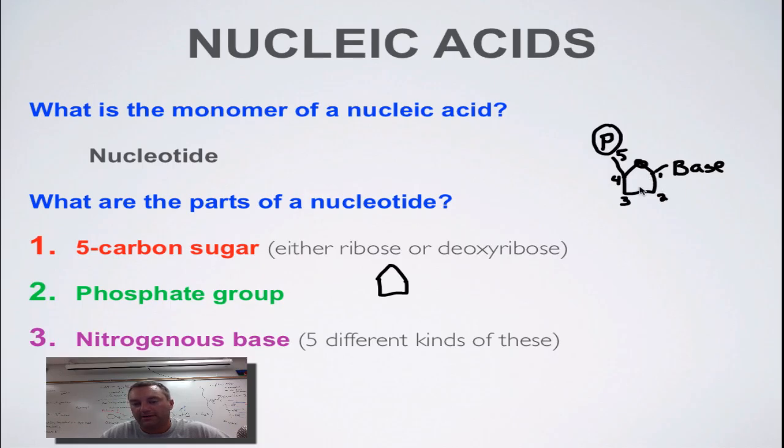Sugar, phosphate, base. Put an S in here for sugar. That's either going to be ribose or deoxyribose depending on if you're in DNA or RNA. Ribose for RNA, deoxyribose for DNA.